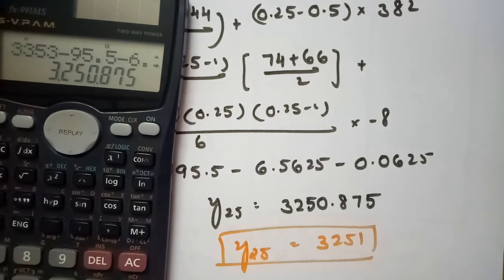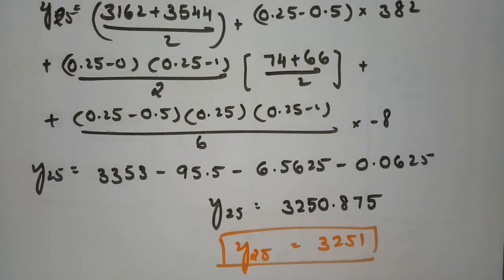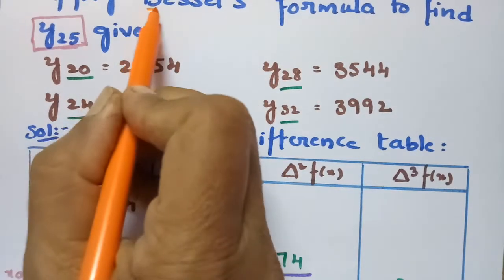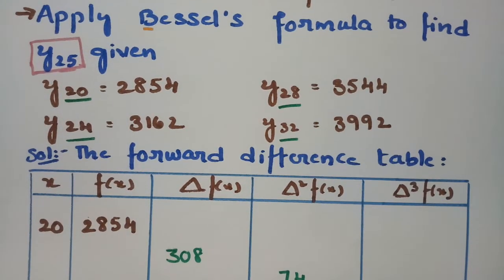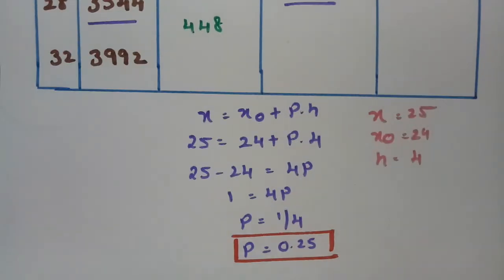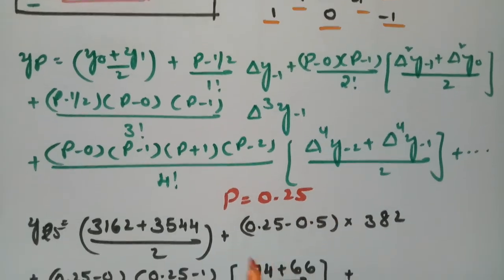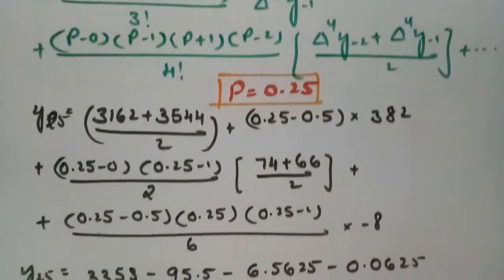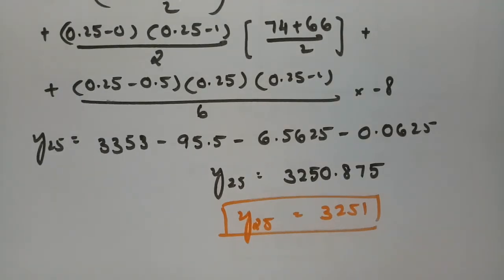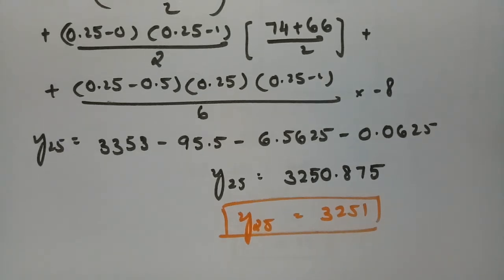So this is how we calculate y(25) using Bessel's formula. We take double then single then double then single values, frame the forward difference table, calculate the p value, write the formula, and substitute all values from the table. Thank you so much for watching. I'll be uploading my next topic very soon — until then, practice, and please like and share with your friends.